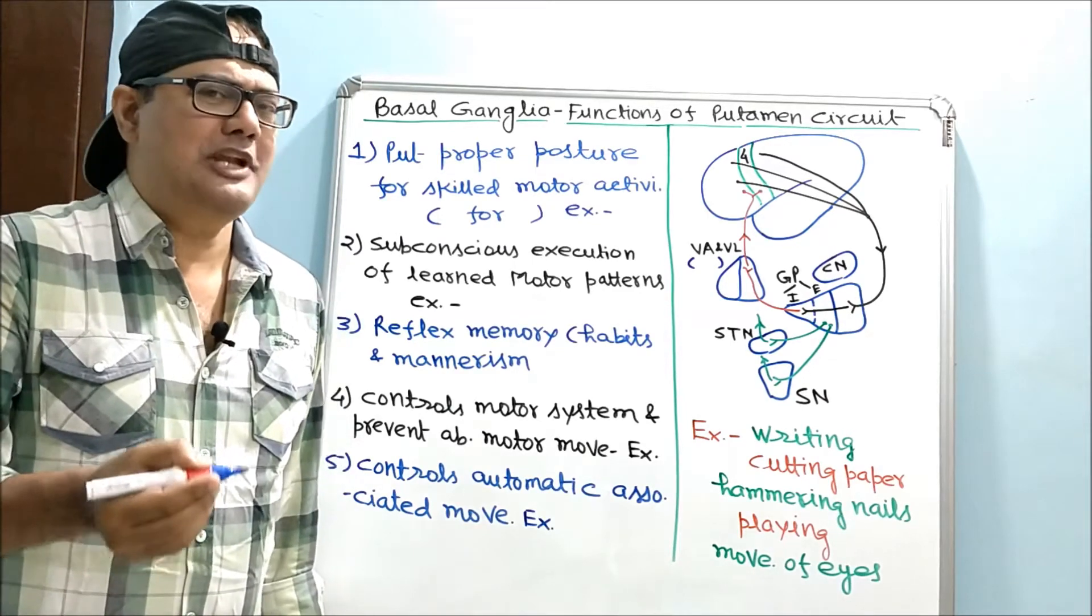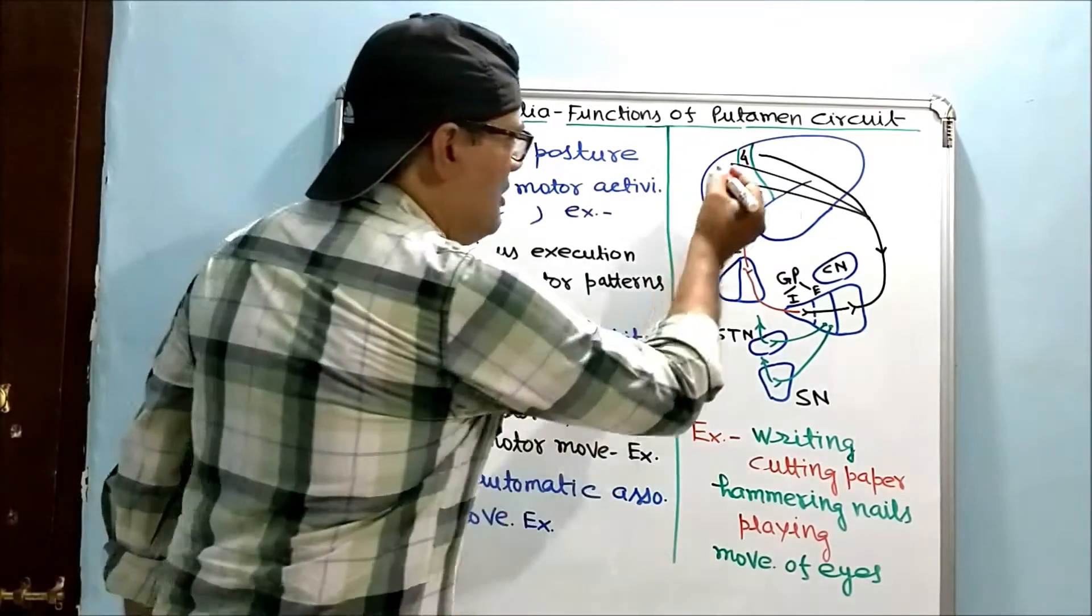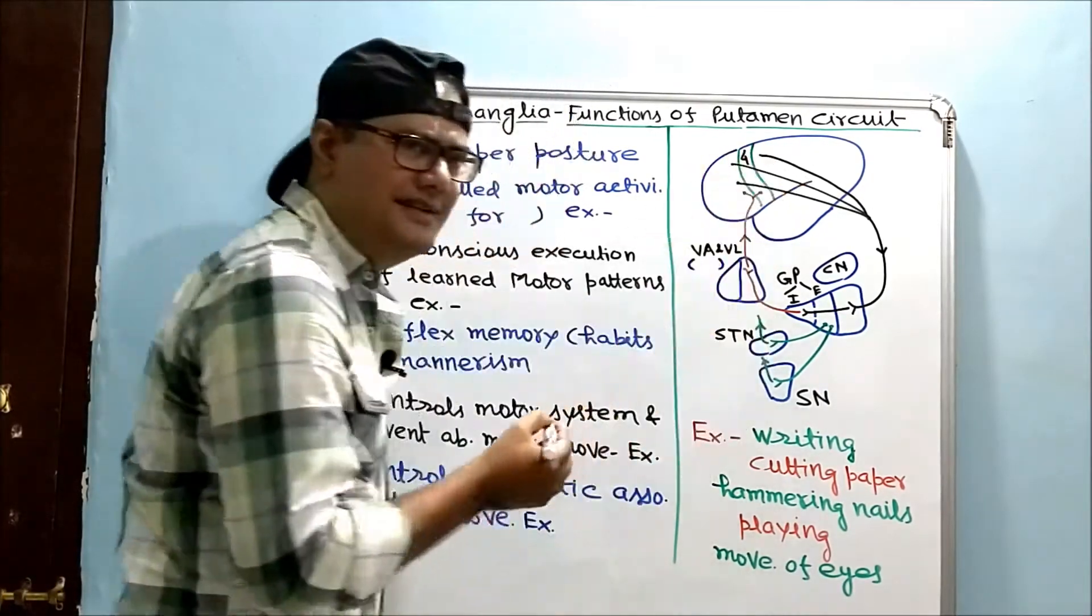Basal ganglia: five functions of putamen circuit. First, the circuit. This circuit begins with fibers arising from premotor, supplementary motor, and sensory cortex.